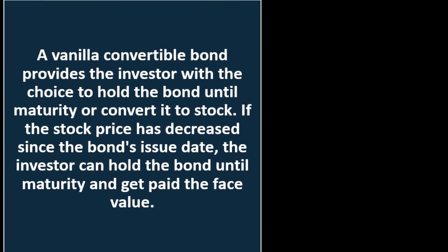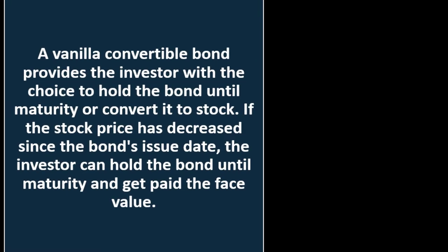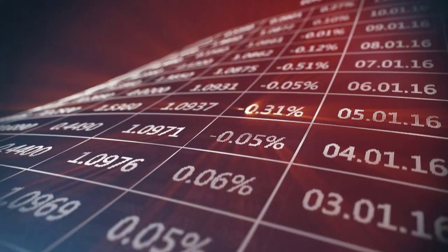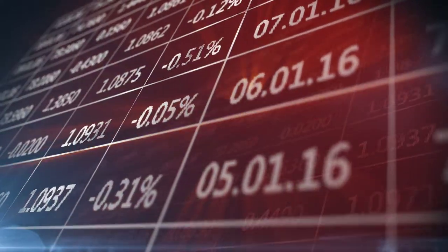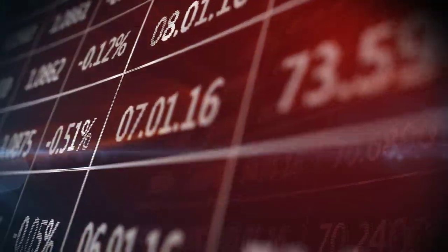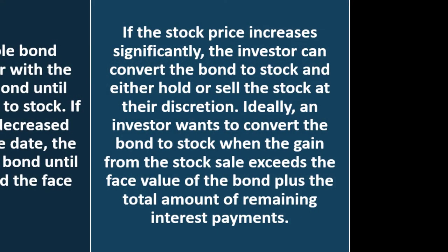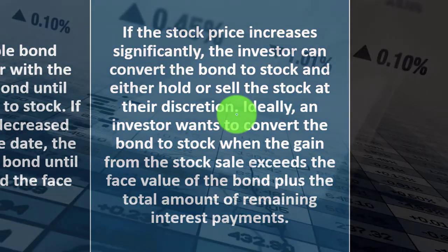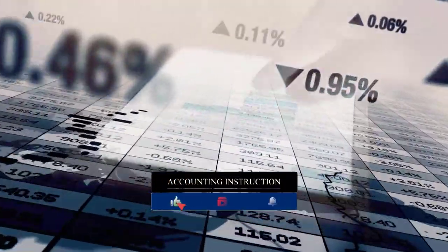Varieties of convertible bonds: a vanilla convertible bond is a plain, general convertible bond that provides the investor with the choice to hold the bond until maturity or convert it to stock. If the stock price has decreased since the bond's issue date, the investor can hold the bond until maturity and get paid the face value. If the stock price increases significantly, on the other hand, the investor can convert the bond to stock and either hold or sell the stock at their discretion.